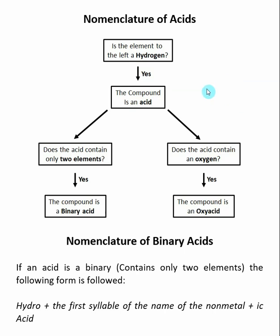When utilizing the nomenclature flowchart that we discussed in previous sections, if you had determined that you have an acid, there's a little bit more work that you need to do because there are actually two different types of acids that we need to be able to name. So if you've determined that the element to the left is a hydrogen, that means that you have an acid and the nomenclature is a little bit different for acids. There are two major types of acids that we want to name.